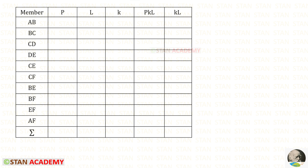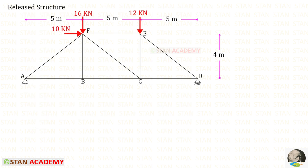As I explained in the previous video, we know that this is the formula to find FBE. Now we have to make this table. P is the member forces in the released structure. We have released BE, so we can't find the member force in BE — we can directly apply 0 for BE. The rest of them we need to find now. Before finding the member forces, we have to find the reactions.